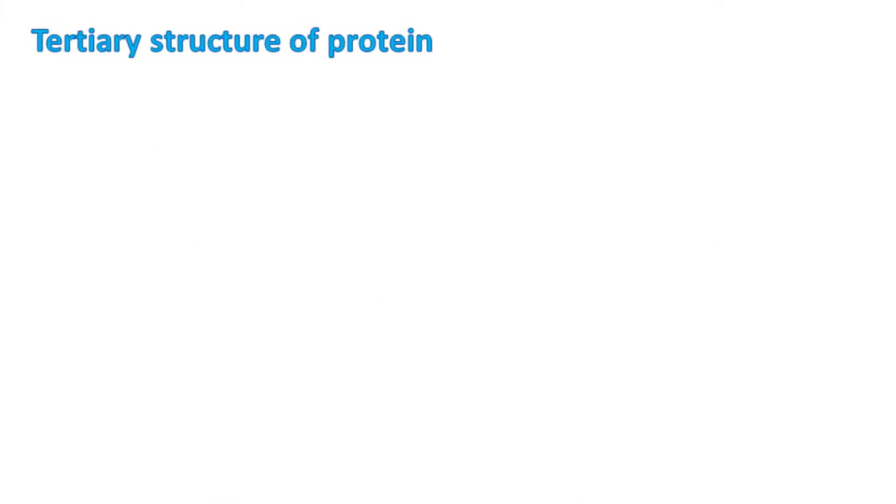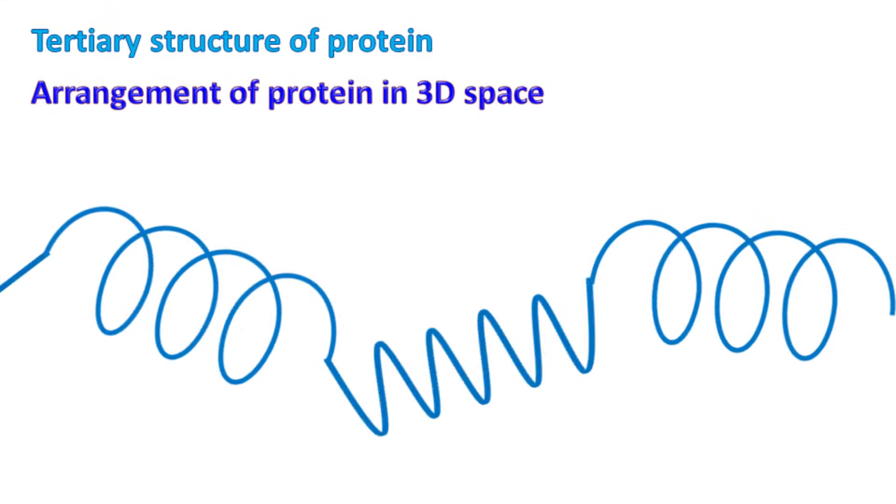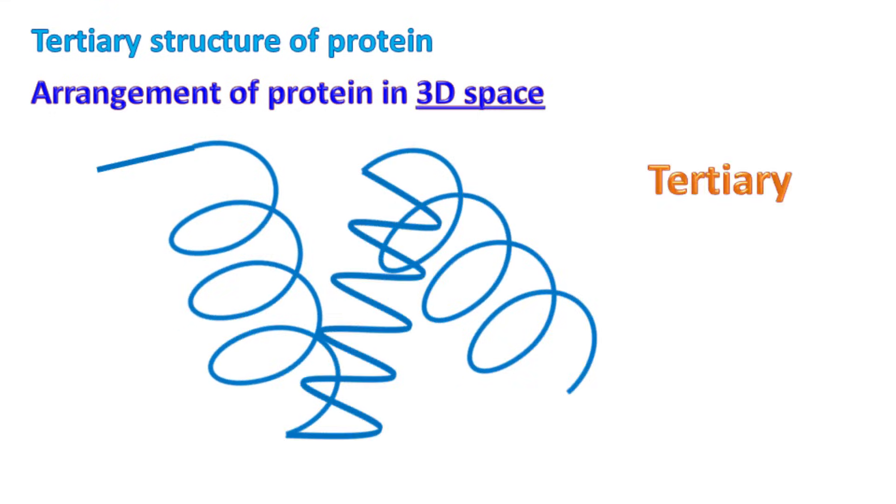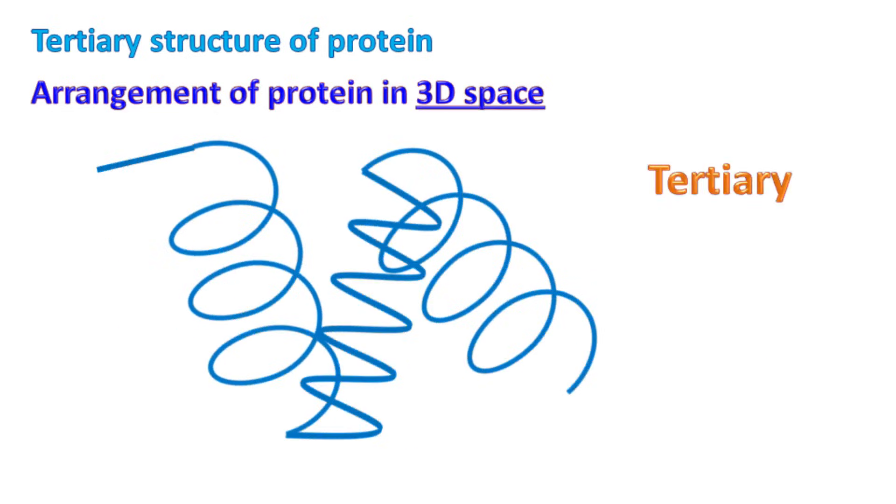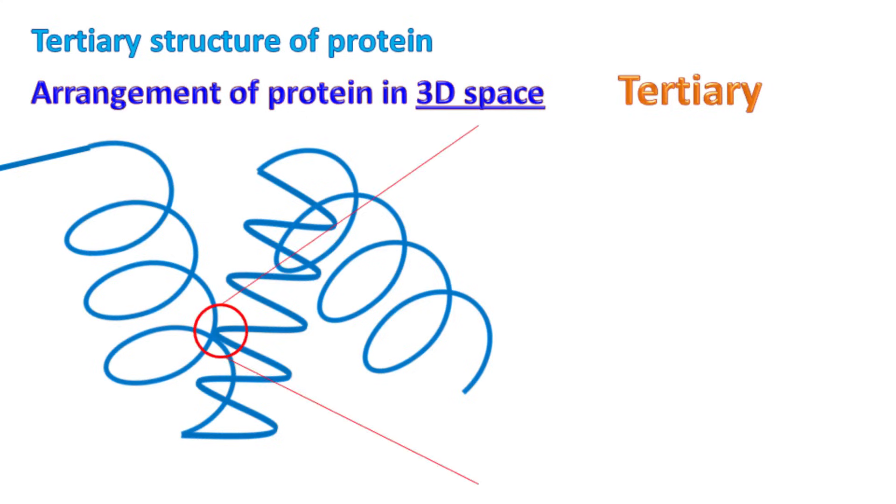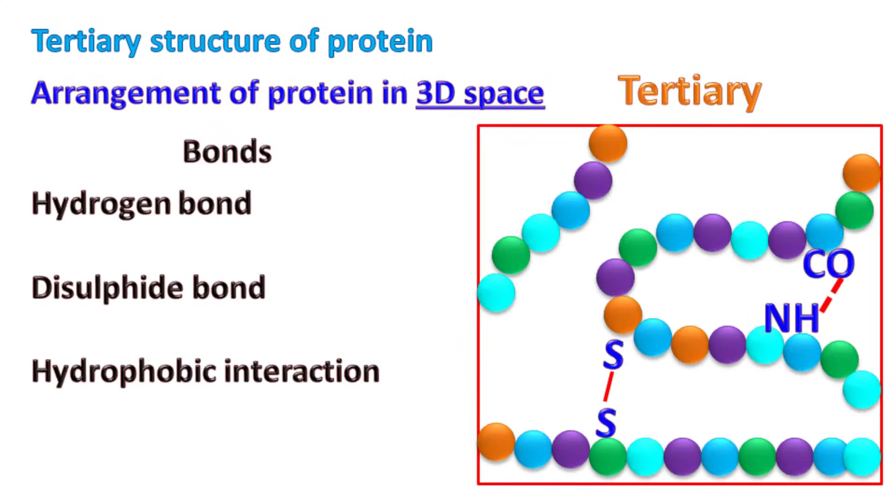Tertiary structure of protein. Arrangement of protein in the three-dimensional space is the tertiary structure of protein. The tertiary structure will also have other bonds like disulfide bond, hydrophobic interactions and ionic interactions.